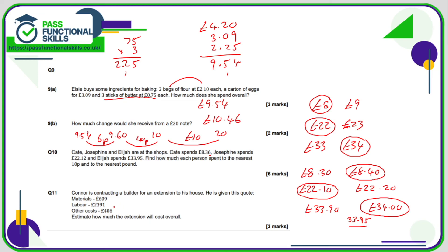Question eleven requires estimation — no calculator. We call the materials approximately £600 and the labour approximately £2400; 600 plus 2400 makes a nice £3000. The remaining amount, £406, we round down to £400. So: £600 plus £400 is £1000, and £1000 plus £2400 comes to a total of £3400.